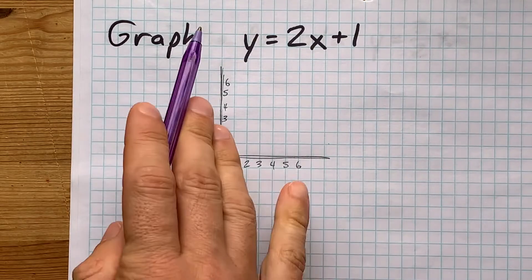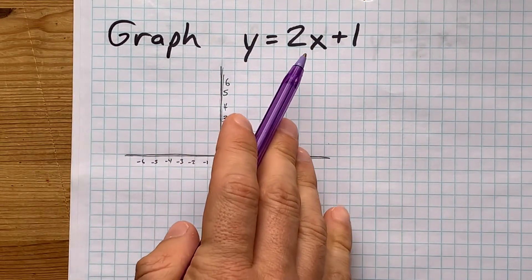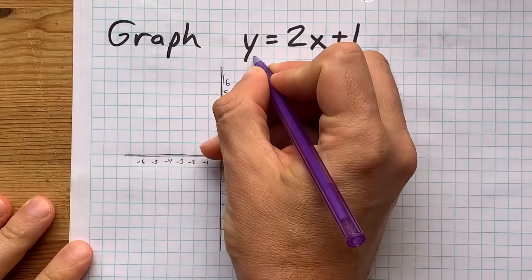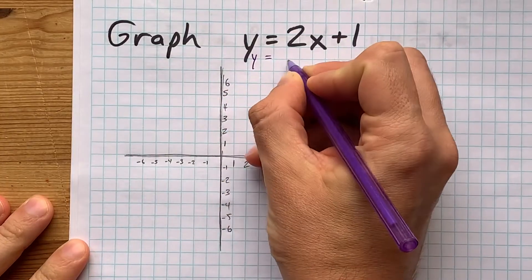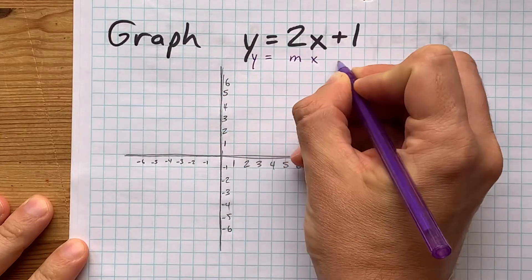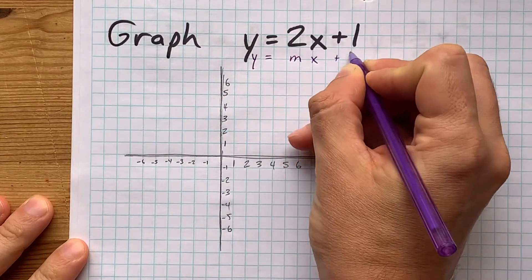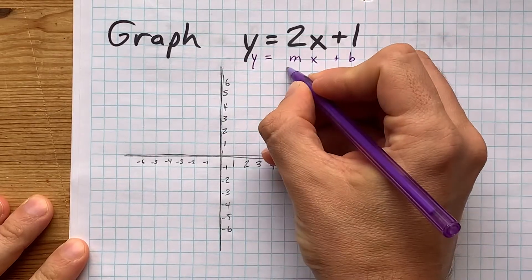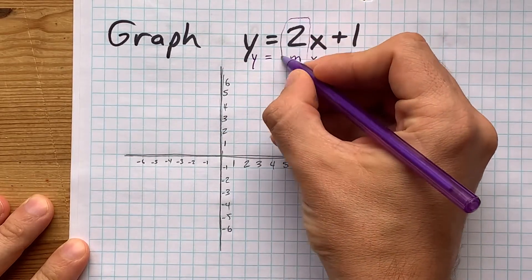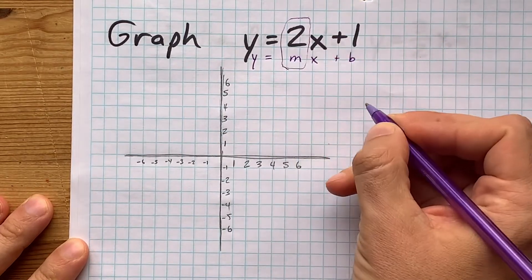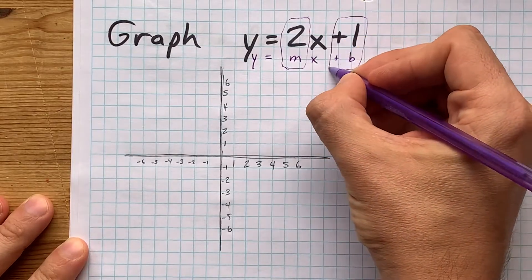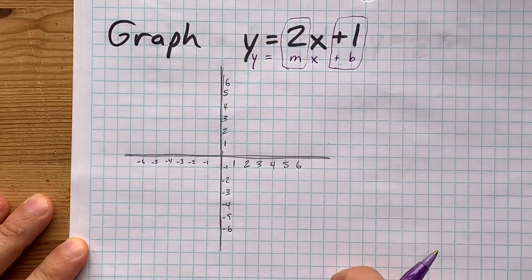Let's graph y equals 2x plus 1. This equation is written in what we call slope-intercept form, y equals mx plus b. You can see here that m, the slope, is 2, and b, the y-intercept, is positive 1.